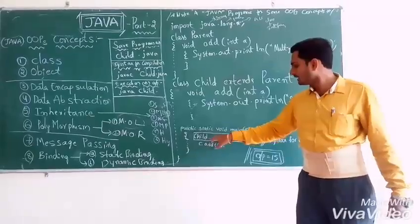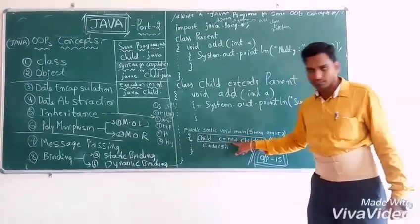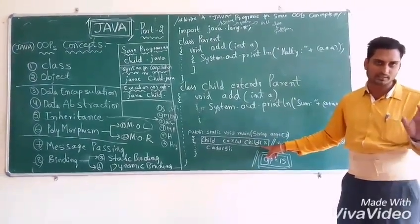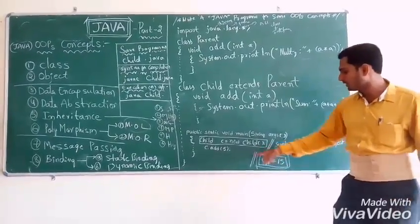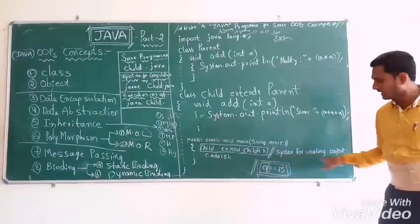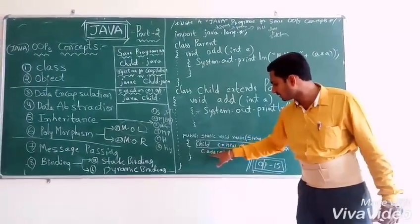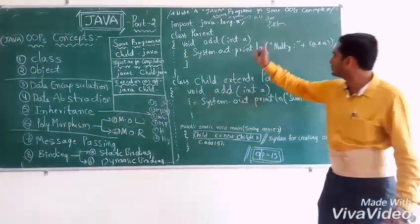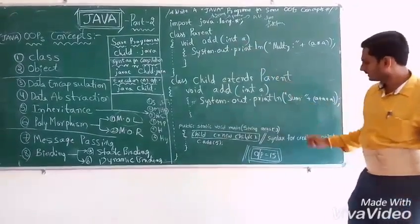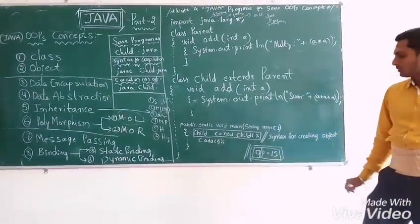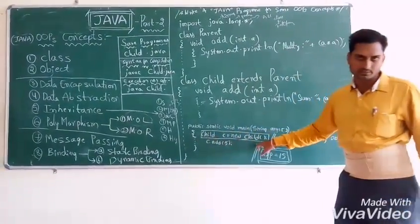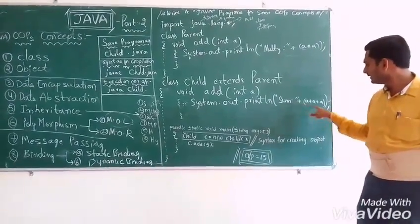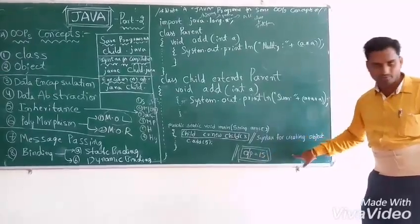Child is a class, C is an object variable — you can use C or any variable name. new is a keyword; Child() is the constructor — same name as the class name. The semicolon ends the statement. This box is the syntax for creating an object. c.add(5) — here 5 is the argument being passed via message passing to the parameter. We created a Child class object, so the add method in class Child will execute and give the output: sum: 50.